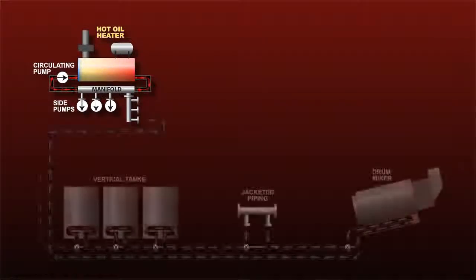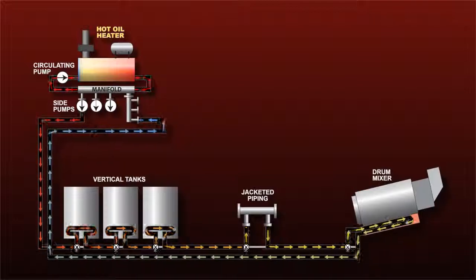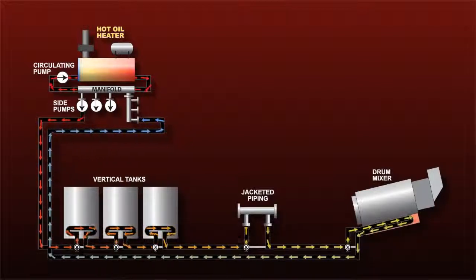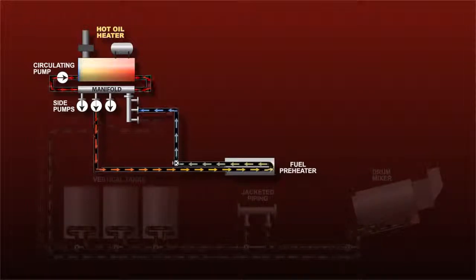Each outlet serves as the hot oil source for an independent circuit with its own side pump. Each side pump circulates the oil through a circuit with less resistance because it has fewer components.